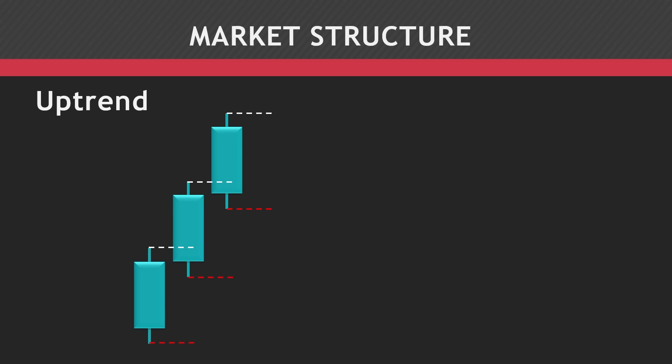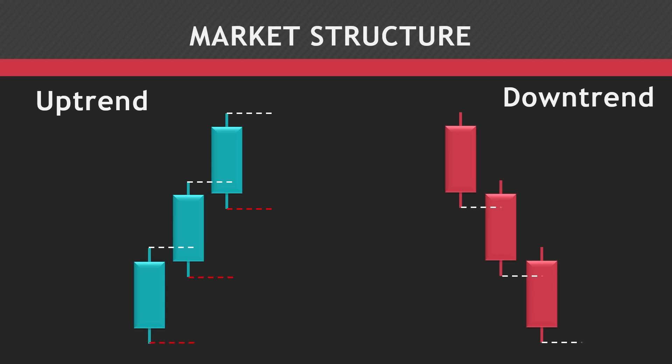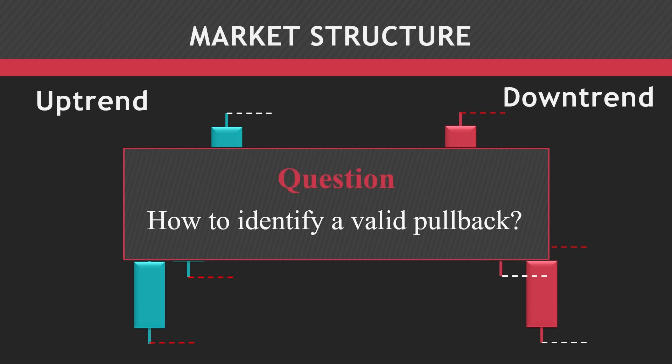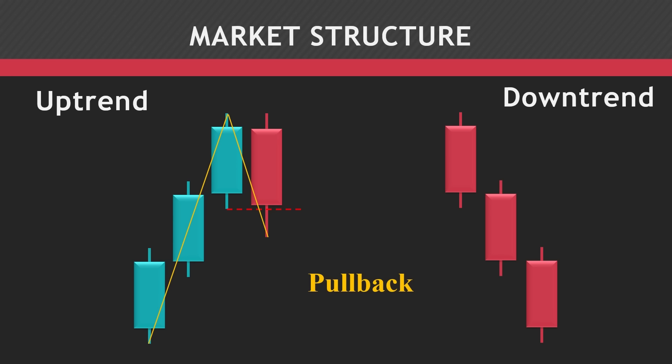The downtrend refers to a pattern where the market makes a series of bearish candlesticks that exceed the lowest price reached by the previous one, indicating continued downward momentum. Also, the high point of each candlestick remains above or equal to the high of the preceding candlestick, implying that the market's upward pressure is limited and the overall trend remains bearish. In the bullish scenario, a valid pullback is identified when a candle breaks below the lowest point of the previous one and sweeps liquidity. Here you can see that the fourth candle has broken below the lowest point of the third candle, thus forming a valid pullback. Remember, the candle color does not matter while identifying pullbacks. Same way, a valid pullback is identified when a candle breaks above the highest point of the previous one and sweeps liquidity, in the bearish scenario.